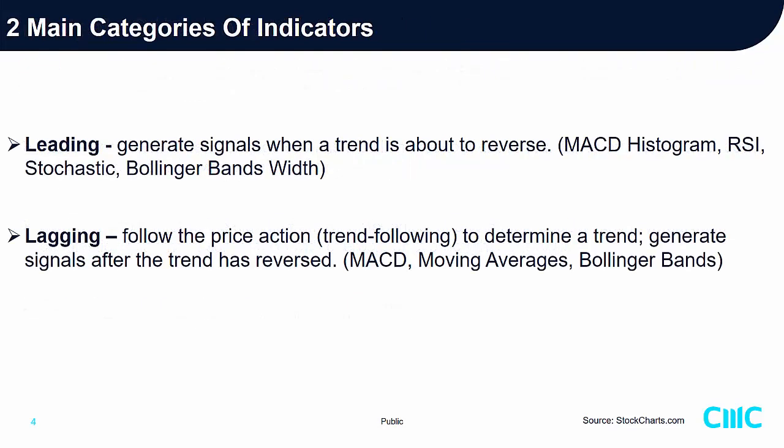There are two main categories of indicators. The first category are leading indicators. This group generates signals when a trend is about to reverse. A particular set of leading indicators can tell us whether an uptrend can still maintain its momentum, or whether the momentum will start to change and the trend is about to reverse — either to sideways or to a downtrend. Such leading indicators include MACD histogram, RSI, Stochastic, and Bollinger Bandwidth.